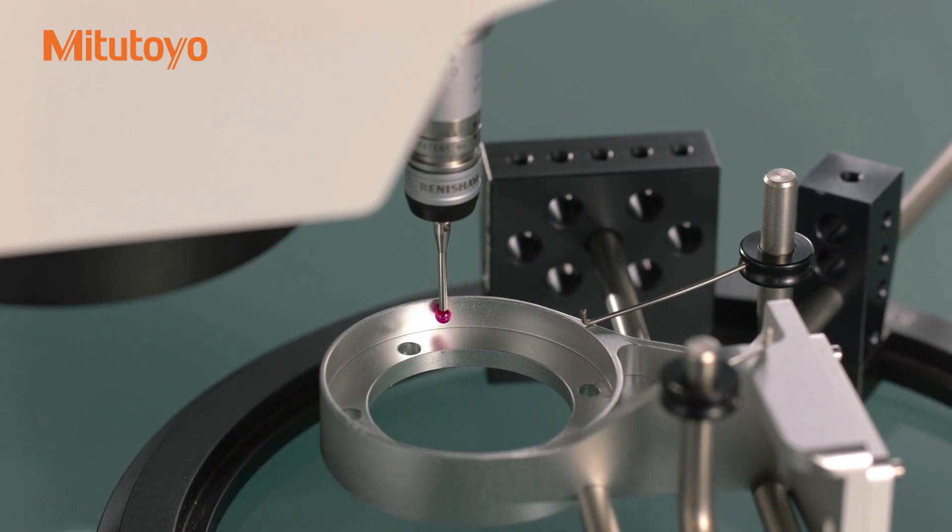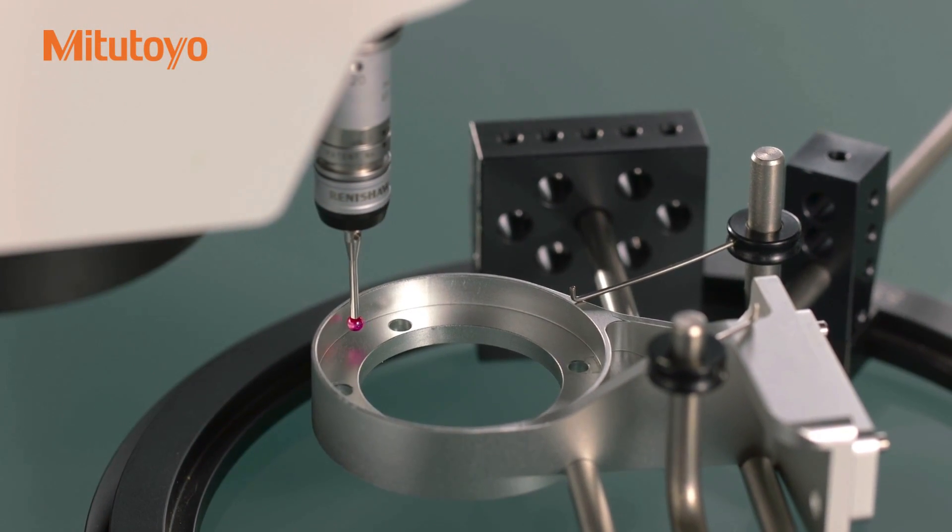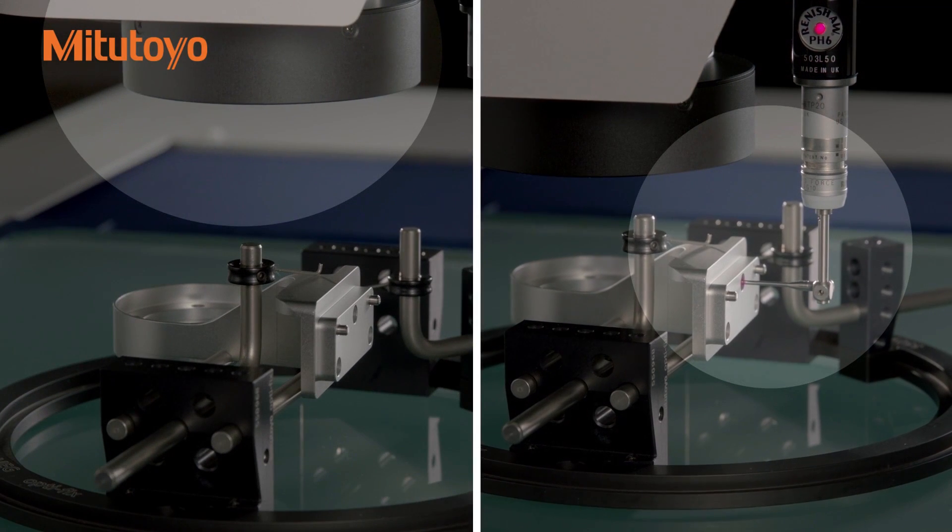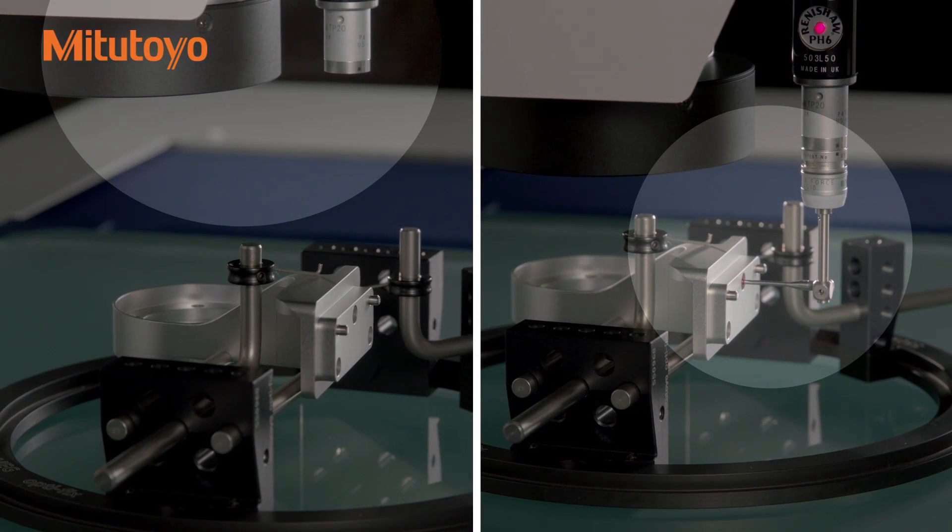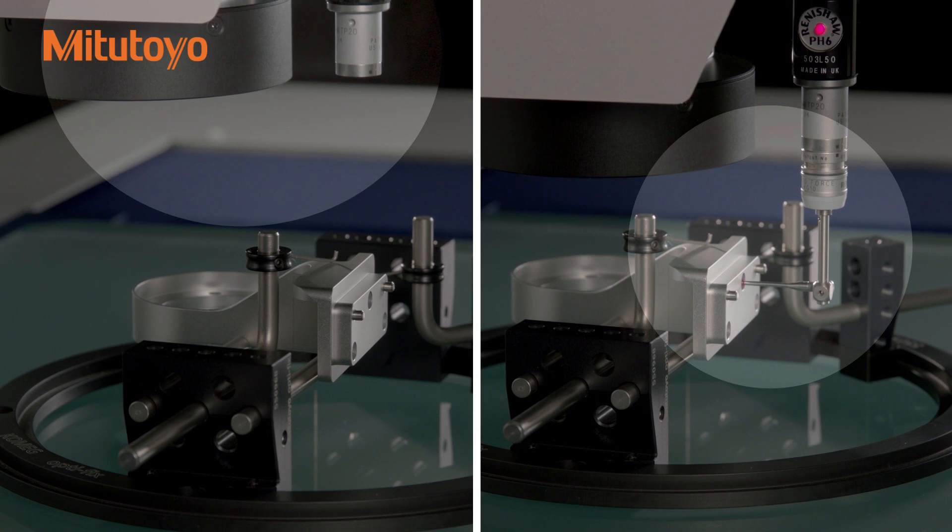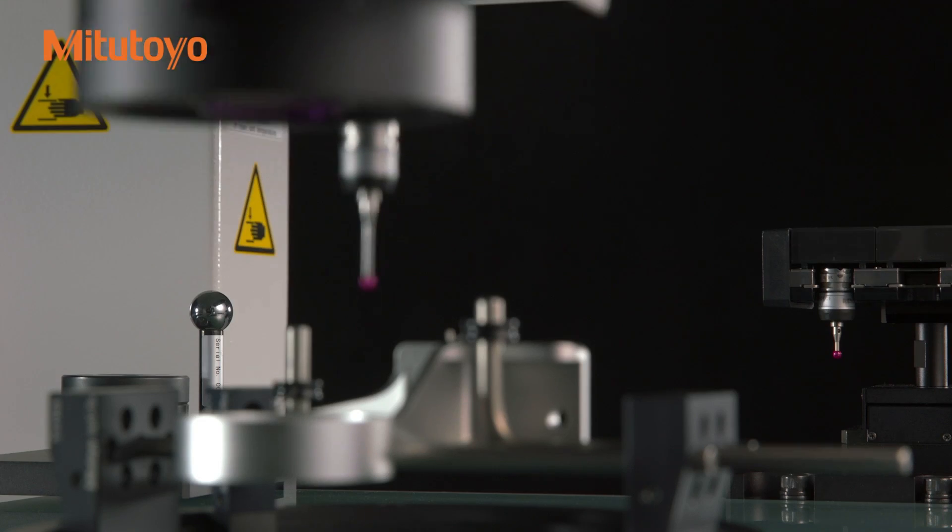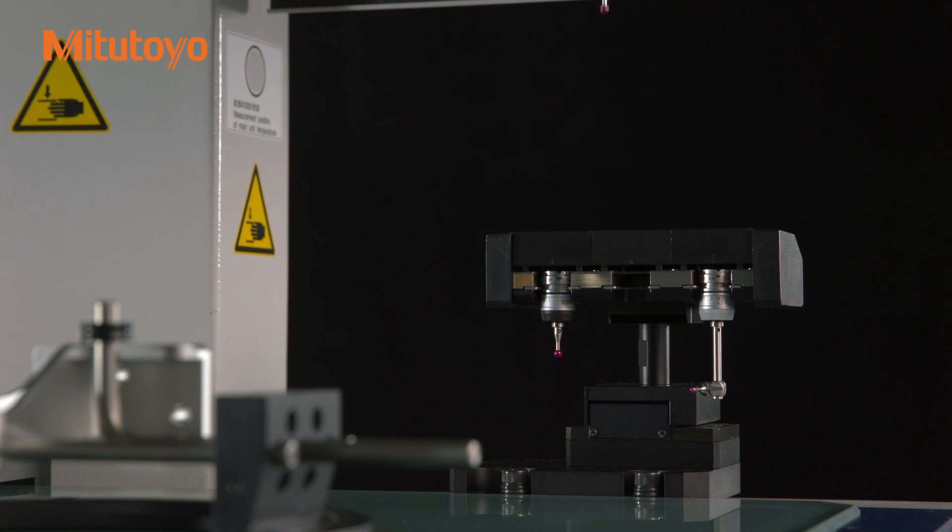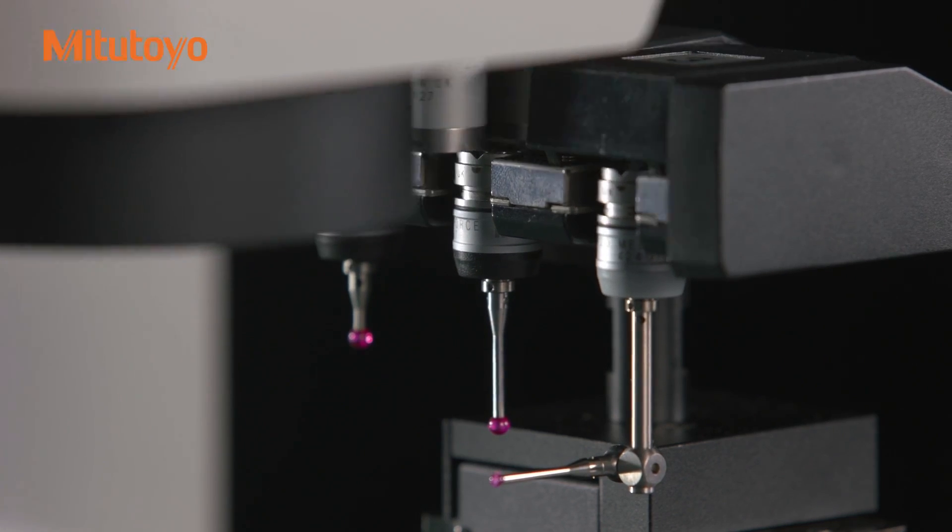QV Active can be equipped with a touch probe. This allows for non-contact and contact measurements to be combined in a single platform and reduces the need for multiple setups for a single part. This all-in-one solution is economical and saves space.